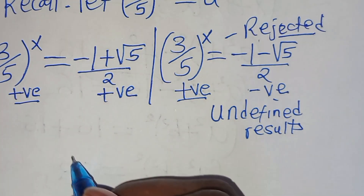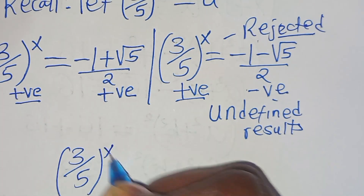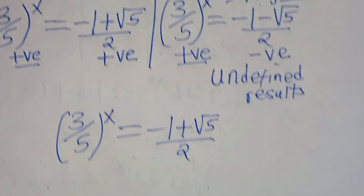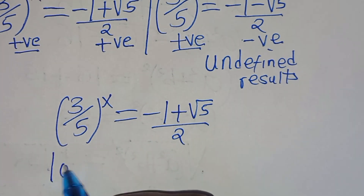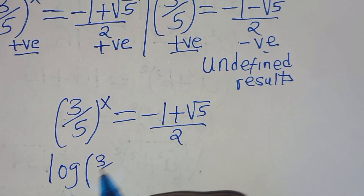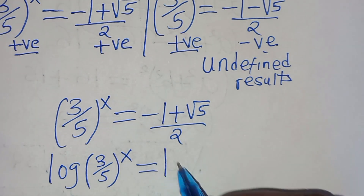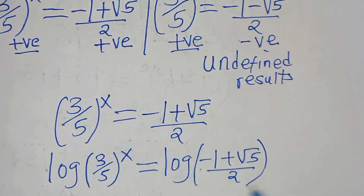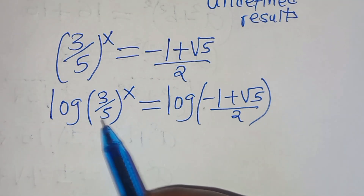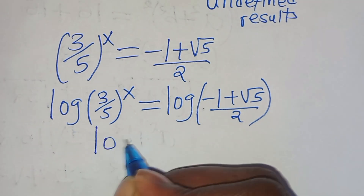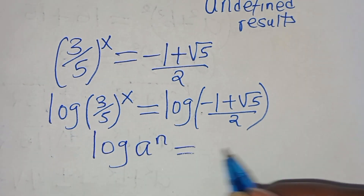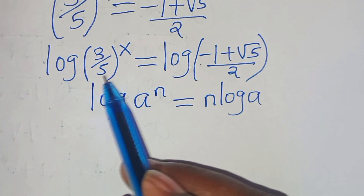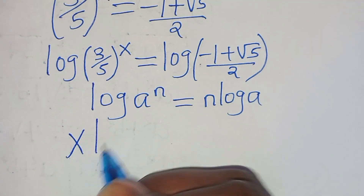Proceeding with the first part: (3/5) raised to the power of x equals (minus 1 plus square root of 5) over 2. To solve for x, we introduce logarithm on both sides: log of (3/5)^x equals log of (minus 1 + √5)/2. Since log(3/5)^x is in the form log(a^n), we can express this as x times log(3/5).